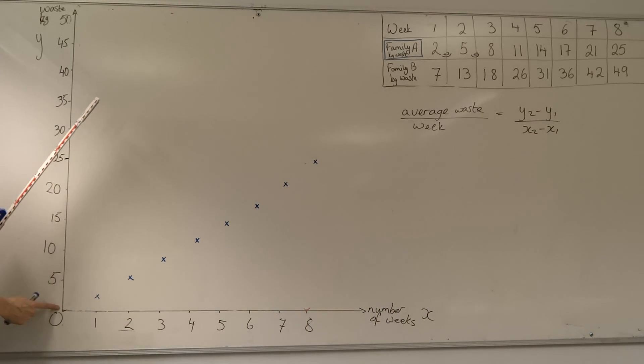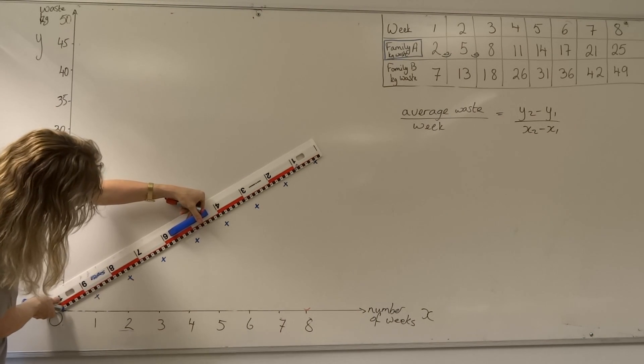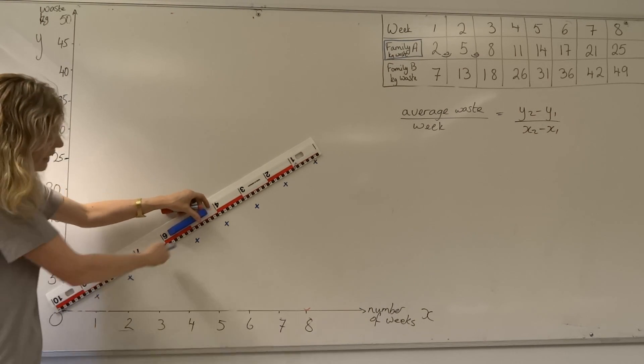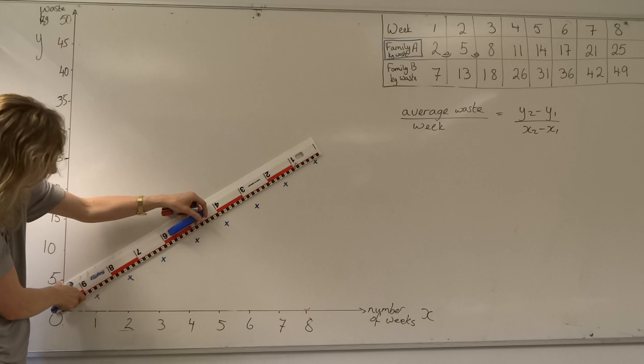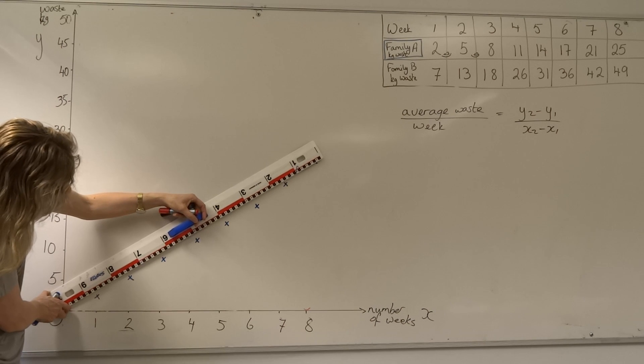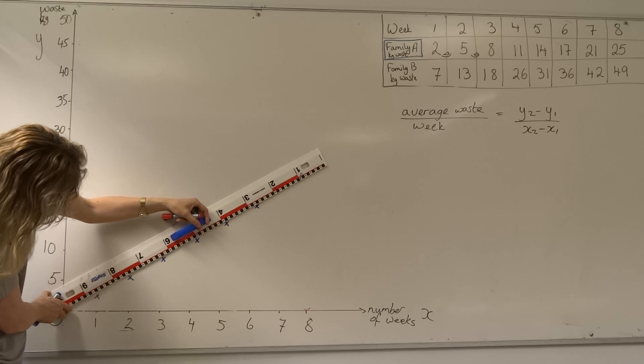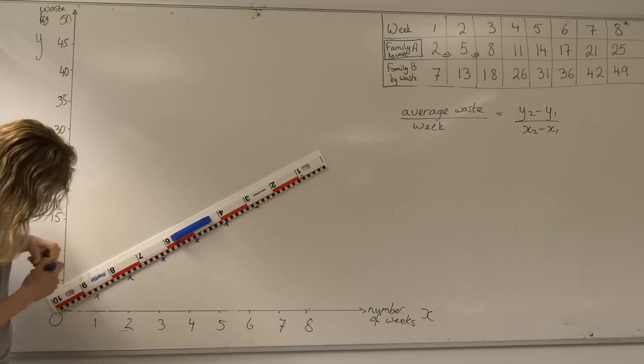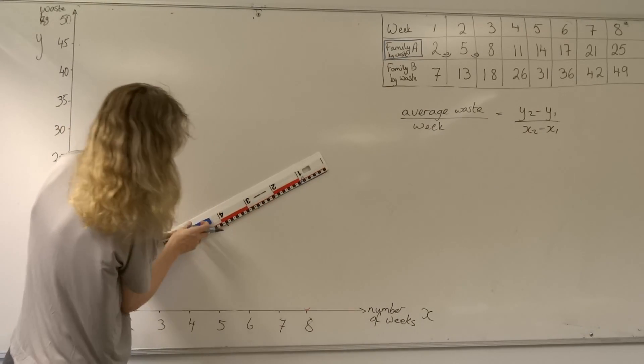We know that we had zero waste at week zero, so we have to go through the origin. Now we have to try and make a point that goes as close as possible to as many crosses. If I put my line here, all the crosses are below the ruler, and I need as many crosses above as I do below, but I still have to go through zero. So I'm going to move my ruler down until about half my crosses have disappeared. There's one disappeared, two disappeared, three disappeared, about there I think, maybe slightly lower. Let's plot this line in.